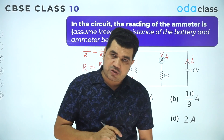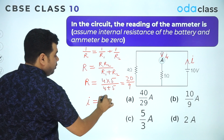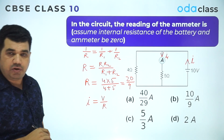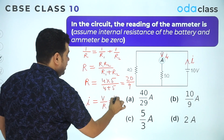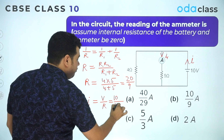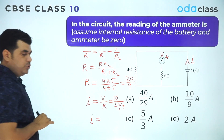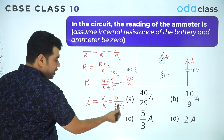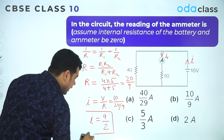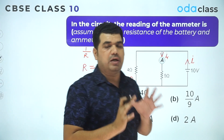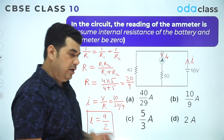Now applying Ohm's law: I = V/R. The EMF of the cell is 10 volts, and R_equivalent is 20/9. So total current I = 10 ÷ (20/9) = 10 × (9/20) = 9/2 amperes. But this is the total current from the battery, not the ammeter reading, so we need to distribute this current between the two parallel resistances.